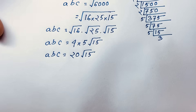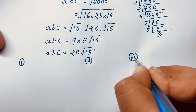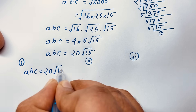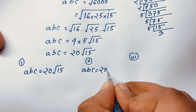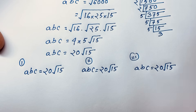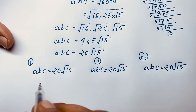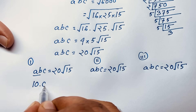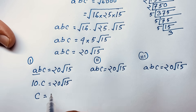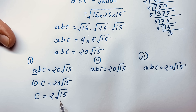So ABC equals 20√15. Recall that AB equals 10. Substituting AB equals 10 into ABC equals 20√15, we get 10C equals 20√15. Dividing both sides by 10, we find C equals 2√15.